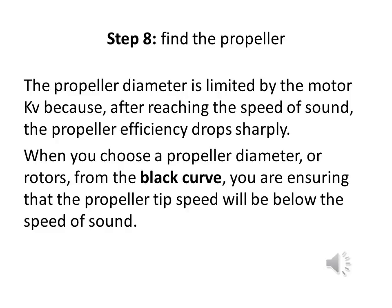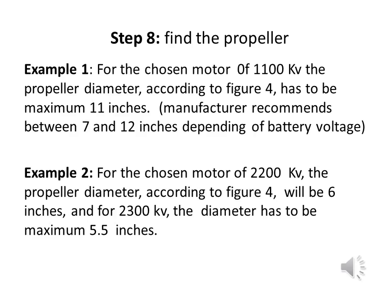Step 8 (continued): The propeller diameter is limited by kV because after reaching the speed of sound, propeller efficiency drops sharply. Choosing a diameter from the black curve ensures the propeller tip speed stays below the speed of sound. Example 1 — for the 1,100 kV motor, propeller diameter must be maximum 10 inches; manufacturer recommends 7–12 inches depending on battery voltage. Example 2 — for a 2,200 kV motor the diameter will be 6 inches; for 2,300 kV the maximum diameter is 5.5 inches.